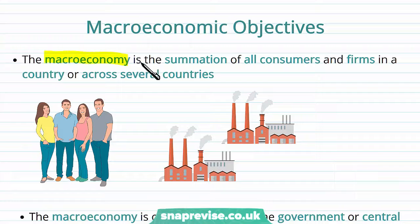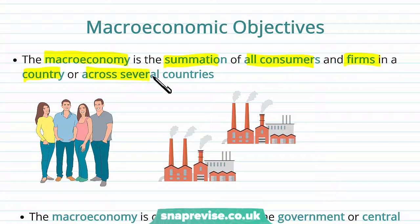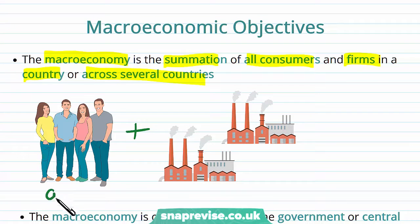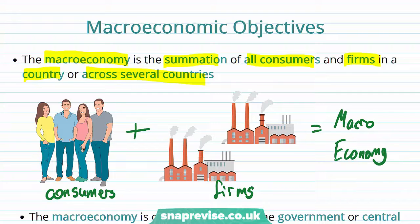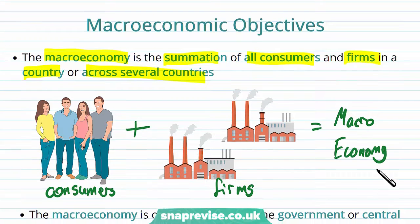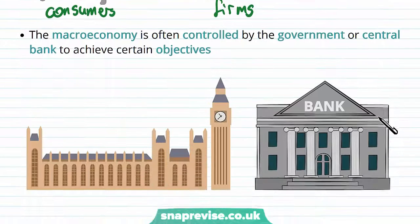We're going to define the macroeconomy as the summation of all consumers and firms in a country or across several countries. We're putting together two of our economic agents — our consumers or households and our firms — and this is going to give us our macroeconomy. So we're considering everybody all together into one big picture and analyzing it.